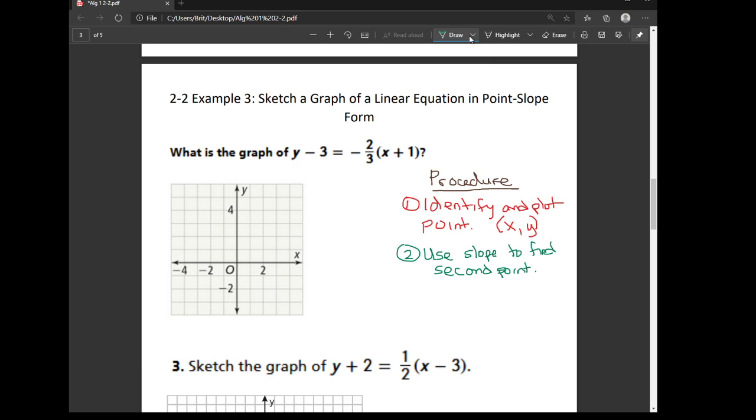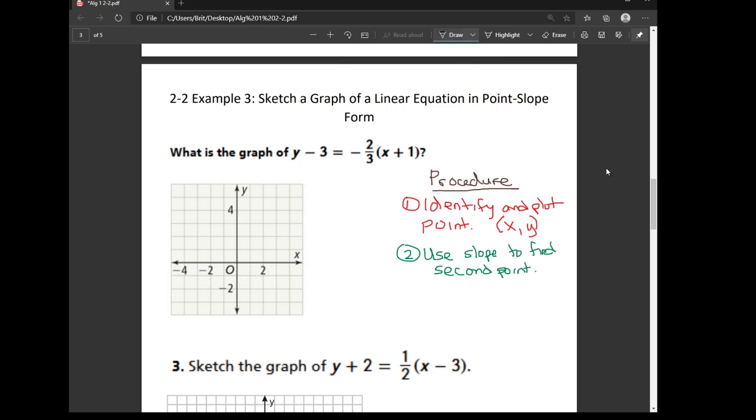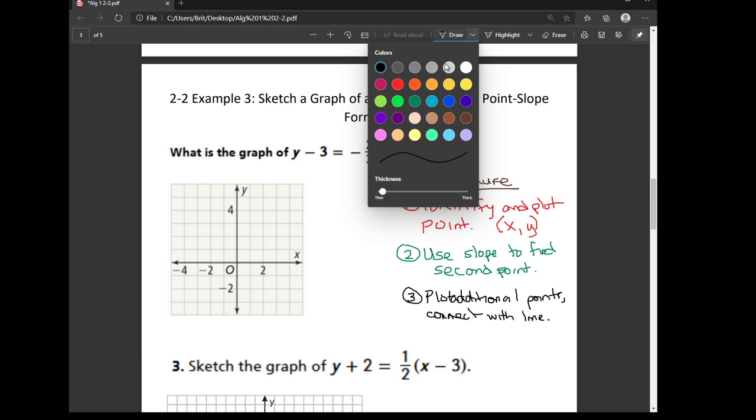And then our last step will be to connect with a line. You can also plot additional points if you want. I might do that. Additional points, and then connect with the line. I find that having more points makes it a lot easier to draw a straight line and it makes my graph more accurate.